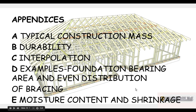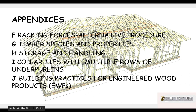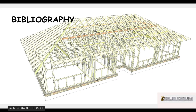Then we have all the appendices — quite a few: Appendix A being typical construction mass, B looking at durability, C looking at interpolation, D looking at examples of foundation bearing area and even distribution of bracing, E looking at moisture content and shrinkage, F looks at racking forces and alternative procedures, G looks at timber species and properties, H looks at storage and handling of materials, I looks at collar ties with multiple rows of purlins, and J looks at building practices for engineered wood products. And the bibliography is at the end.